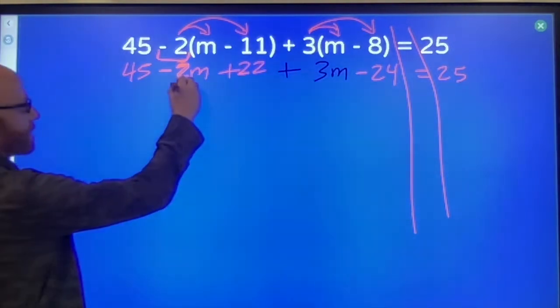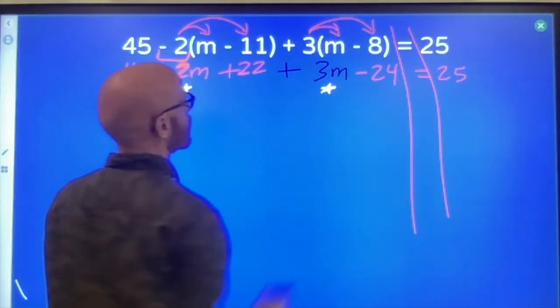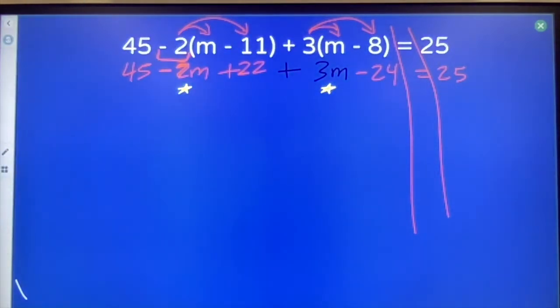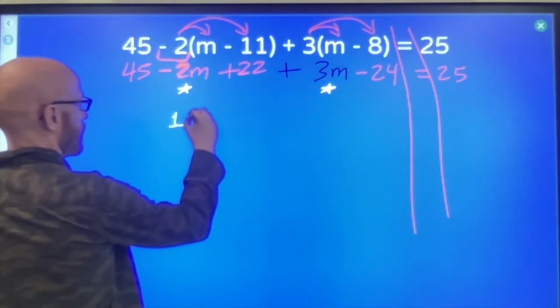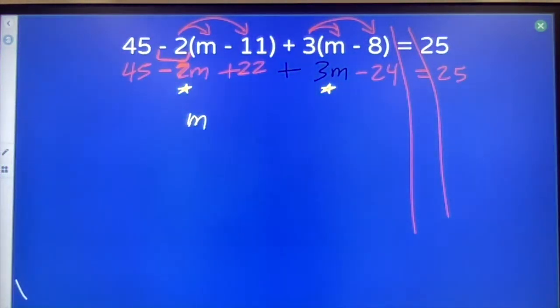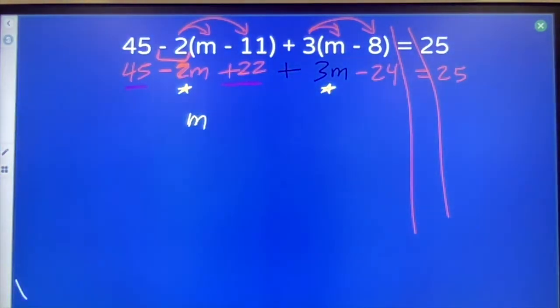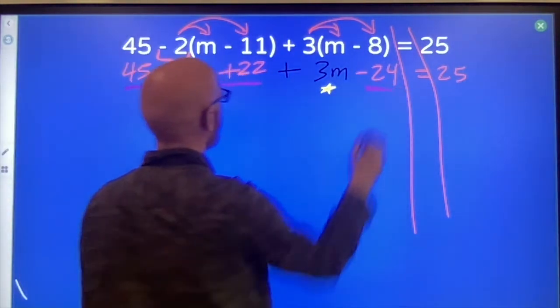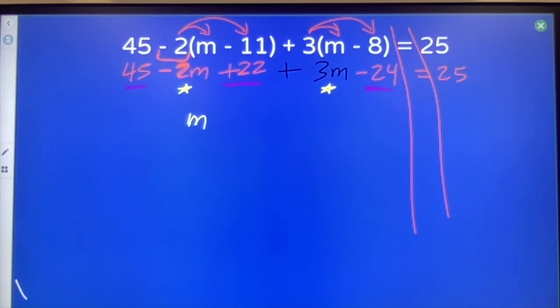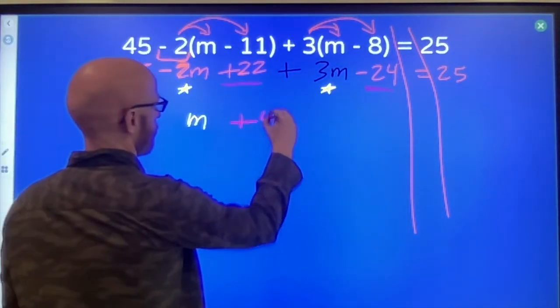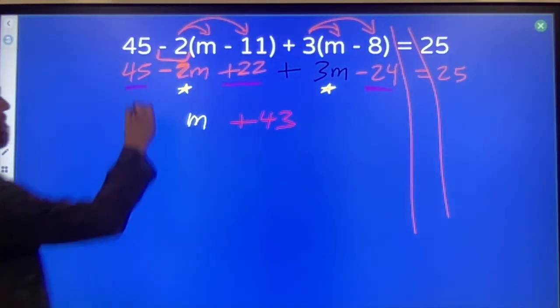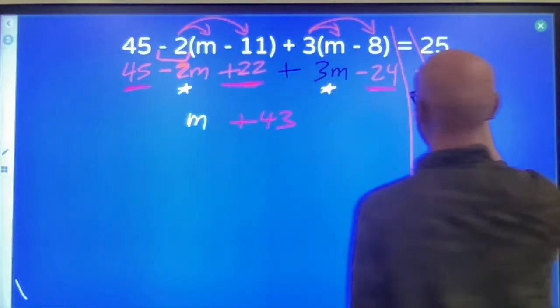Combine things that can be combined. I've got a minus 2 m's and a plus 3 m's, which means this is going to be a very simple equation when we get to the end because that's just 1 m or just m. My numbers, if I combine them, we've got 45 plus 22, that's 67 minus 24 should be down to 43. So 1 m plus 43 equals 25.